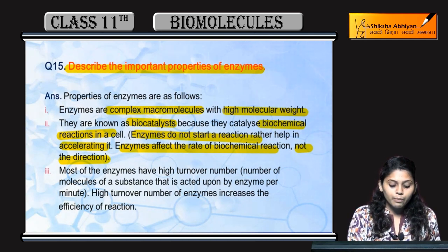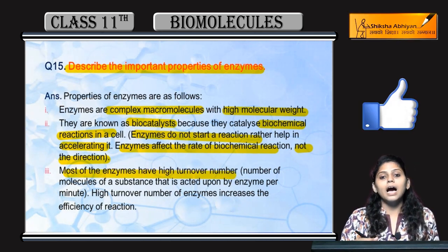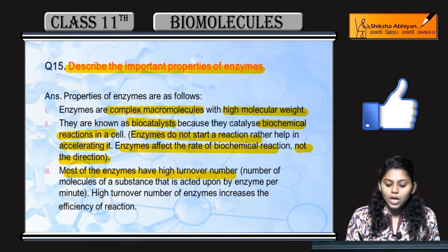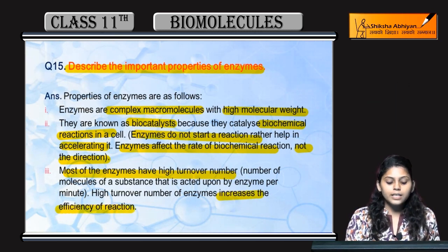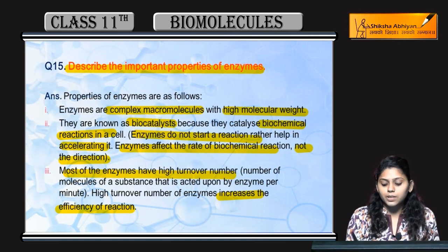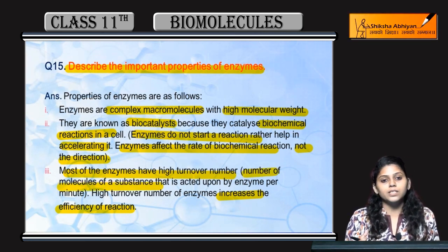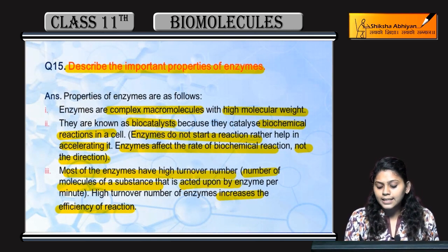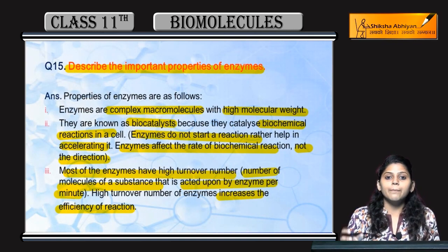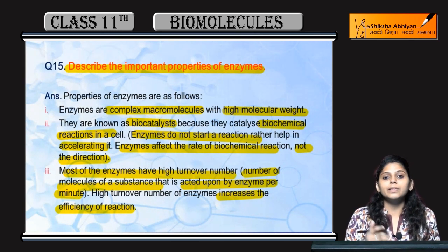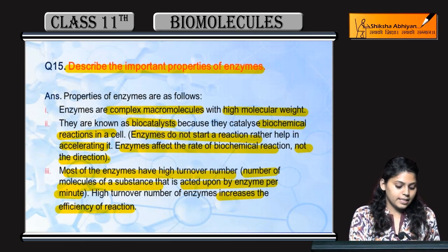Most of the enzymes have a high turnover number. High turnover number hoga to efficiency bhi zyada hogi us reaction ki. Turnover number kya hota hai? It is the number of molecules of substrate jo chahiye hote hain to act upon by the enzyme per minute — taaki enzymes unpe per minute ke hisaab se act kar sake.